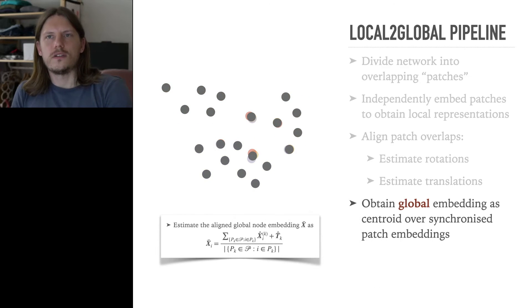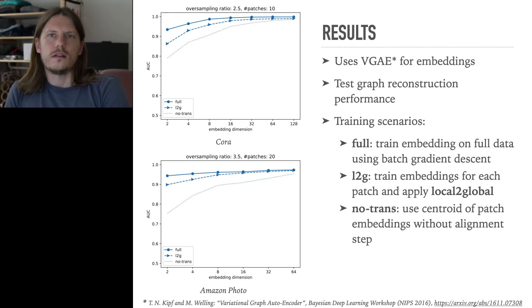Finally, we obtain the global node embedding as the centroid over-synchronized patch embeddings of the node. Preliminary results on medium-scale networks suggest that graph reconstruction performance of local-to-global is comparable to using the full data to train the embedding. Further applications of local-to-global to truly large-scale data and downstream tasks are work in progress.